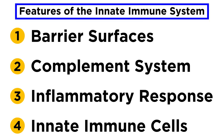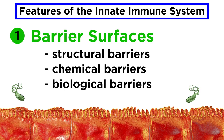In the previous tutorial, we went over a general outline of the components of the innate immune system, and the first thing we mentioned was barrier surfaces. So now let's get a closer look at some of the structural, chemical, and biological barriers our bodies have established to protect our internal tissues from the outside world that is teeming with pathogens.